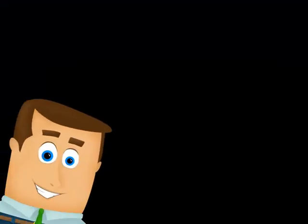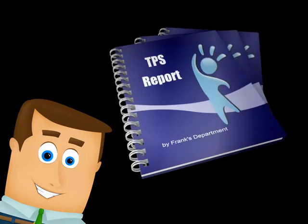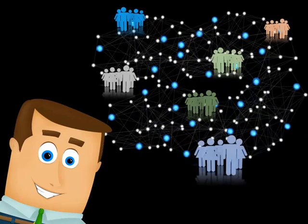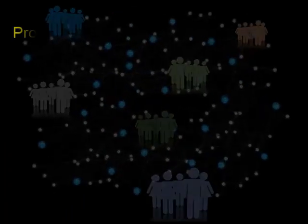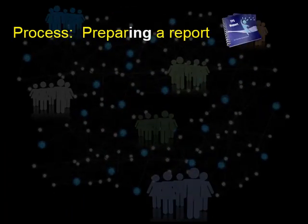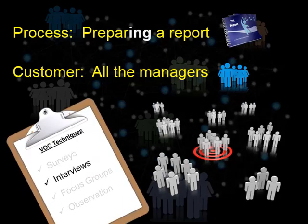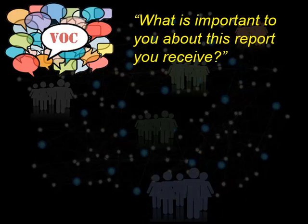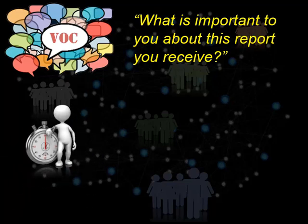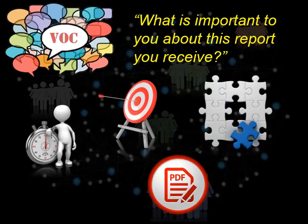Let's look at a quick example to illustrate these terms in action. Meet Frank. Frank runs a department in a big company. His department does many things, one of which is preparing a weekly report that goes to all the managers in the organization. For Frank, preparing a report is his process, the report itself is the output, and the managers who receive that report are his customers. To capture the voice of the customer, Frank interviews a sample of the managers and asks them: what is important to you about this report? They tell Frank it needs to be on time, accurate, complete, and in a PDF format they can easily read on their mobile devices and print out if needed.